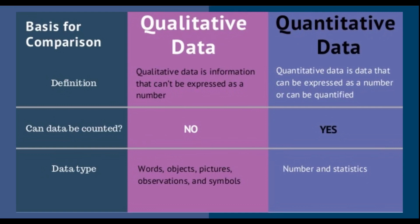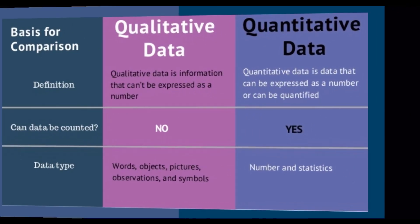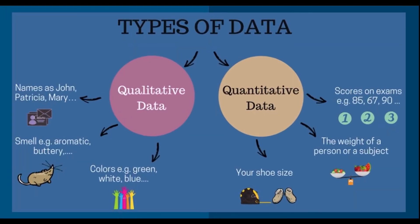pictures, observations, and symbols. While quantitative data is data that can be expressed as a number or can be quantified — it can be counted. The data types are numbers and statistics. Examples of qualitative data include names such as James, John, Patricia, Mary, smells, or colors. While quantitative data may refer to scores on an exam, the weight of a person, or shoe size.